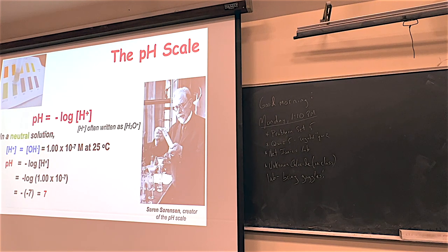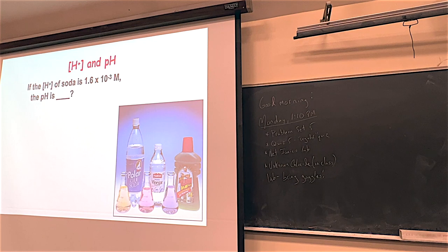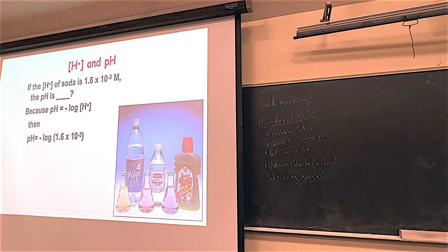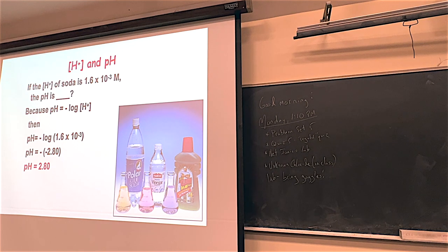Once in a while you'll have weird numbers and it says: what is the pH? In this case, we have a soda can and we test the pH. The concentration is 1.6 × 10⁻³ moles per liter - that's the moles of H+ in a liter of the soda. That's obviously a weird thing to use directly, so what is the pH? pH is minus log of the H+. Minus log of that number comes out to be 2.80.